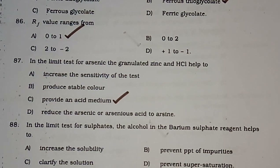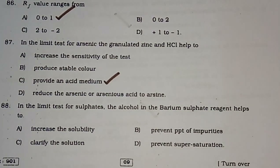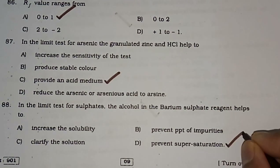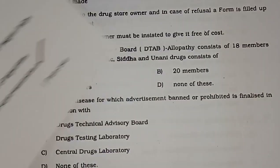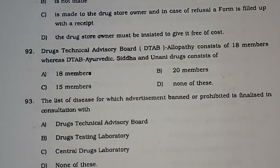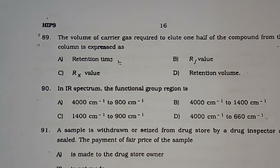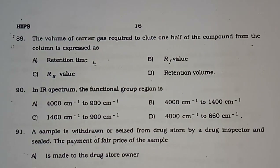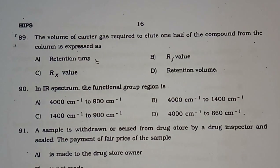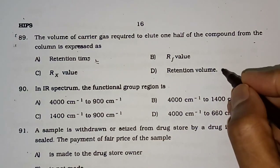Question number 88: In the limit test for sulfate, the alcohol in the barium sulfate reagent helps to — increase solubility, prevent precipitate of impurities, clarify the solution, or prevent supersaturation. The correct answer is to prevent supersaturation. Question number 89: The volume of carrier gas required to elute one half of a compound from the column is expressed as — retention time, Rf value, Rx value, or retention volume. The correct answer is retention volume.